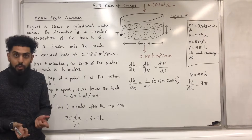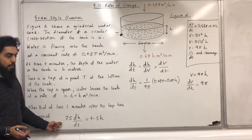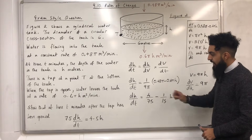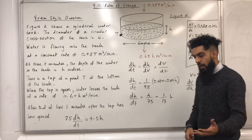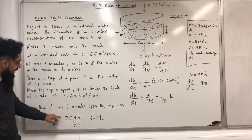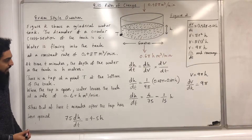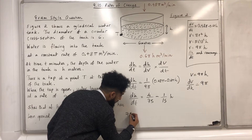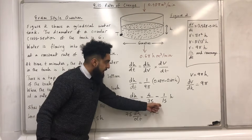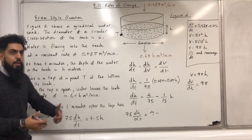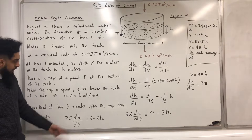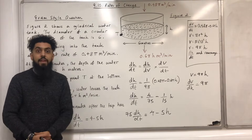Now I use algebra to rearrange. After expanding the bracket, I get dh over dt equals 4 over 75 minus 1 over 15 h. My final step is to multiply both sides by 75, because I need 75 dh over dt. Multiplying through gives 75 dh over dt equals 4 minus 5h, which is the required form.